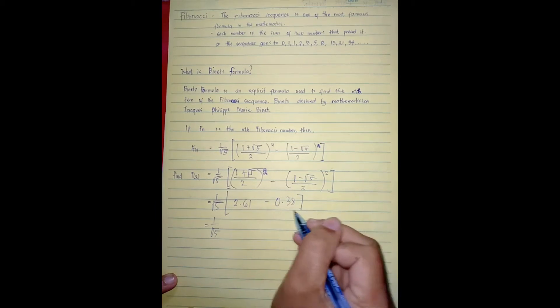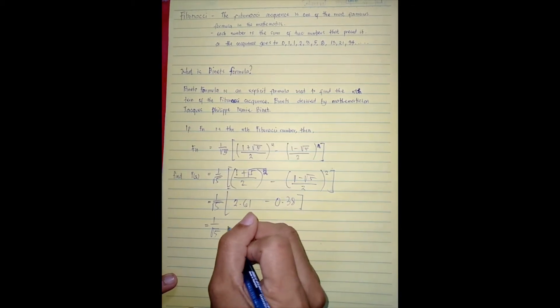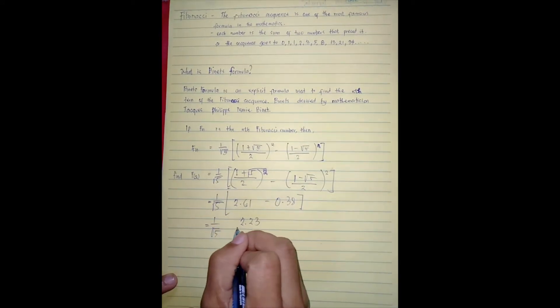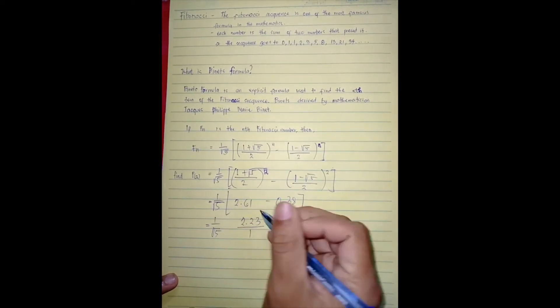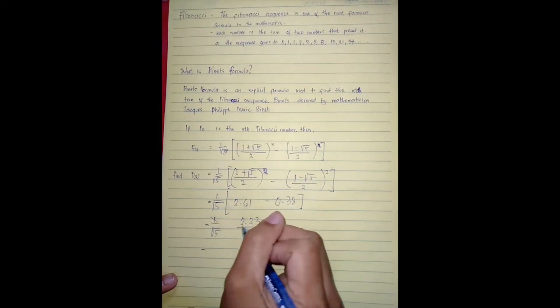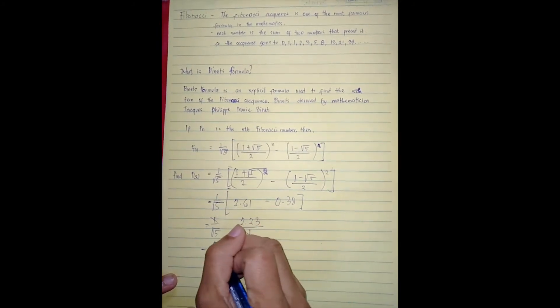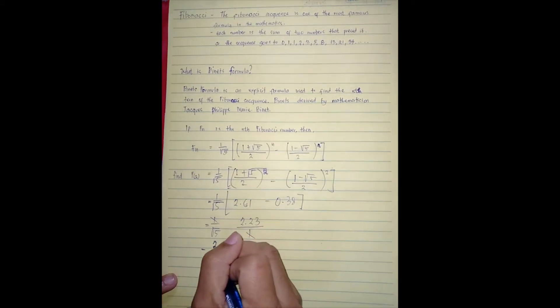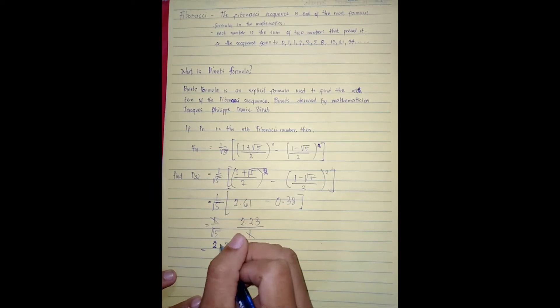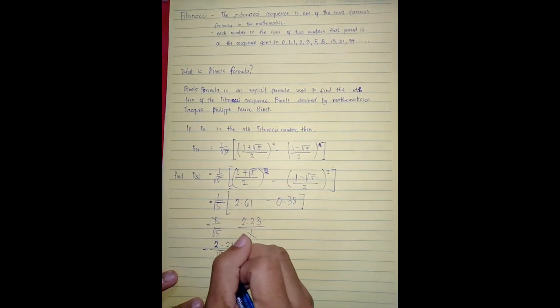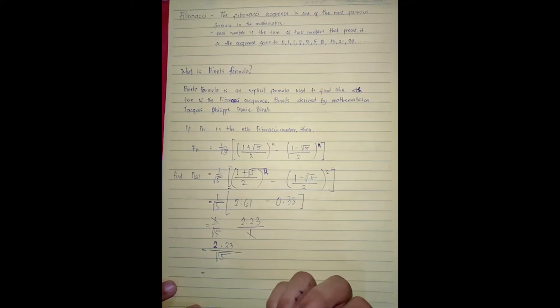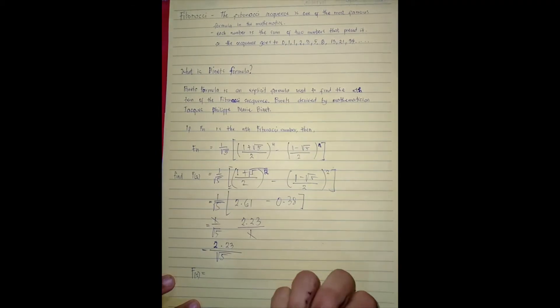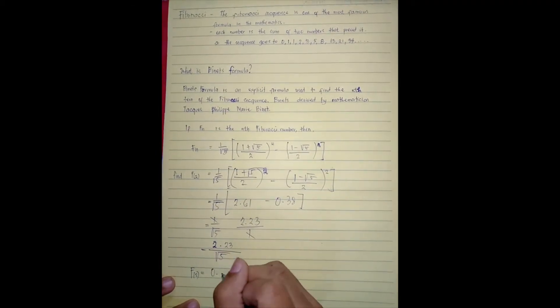Ima-minus natin yung dalawa, which nakakuha tayo ng 2.23. Tapos mag-cross multiply tayo, maglalagay tayo dito ng one, so eto na lang yung natira, so 2.23 divided by square root of five, so ang Fibonacci two meron siyang 0.99.